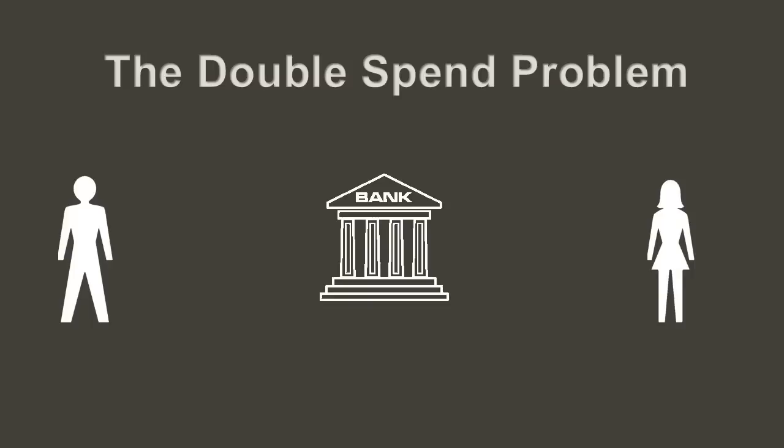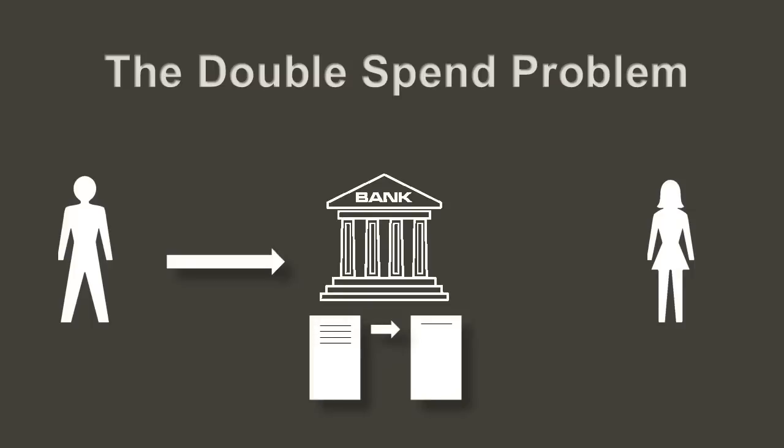Bob wants to send money to Sally. Traditionally, this requires a third party. Bob tells the bank he wants to move his money to Sally's account. The bank records the transaction, and now the money's under Sally's control. Bob no longer has control and can't spend the money again or double spend it somewhere else. In this payment model, the bank is the keeper of the ledger. Both parties trust the bank — well, most of the time.